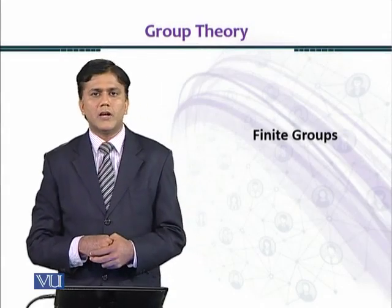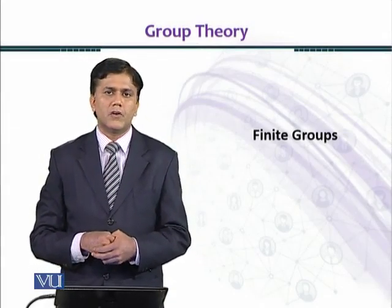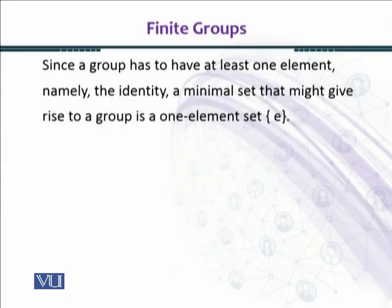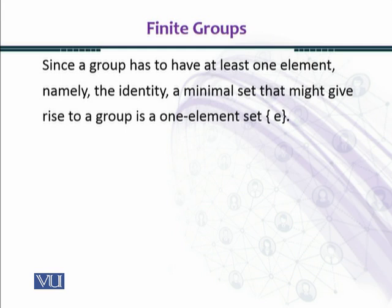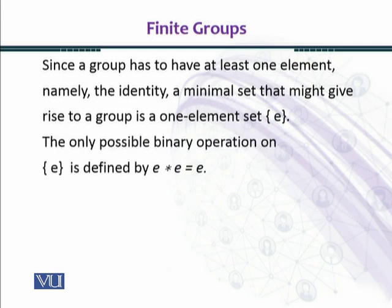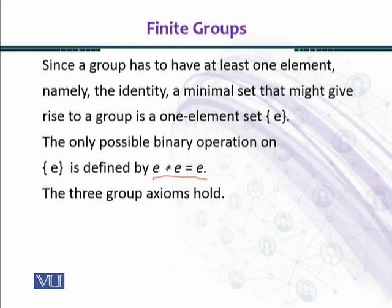In this module we shall discuss a few finite groups. Since a group has to have at least one element — namely the identity — a minimal set that might give rise to a group is a one-element set, singleton {E}, where E is the identity element. The only possible binary operation on singleton {E} is defined by E star E equal to E.